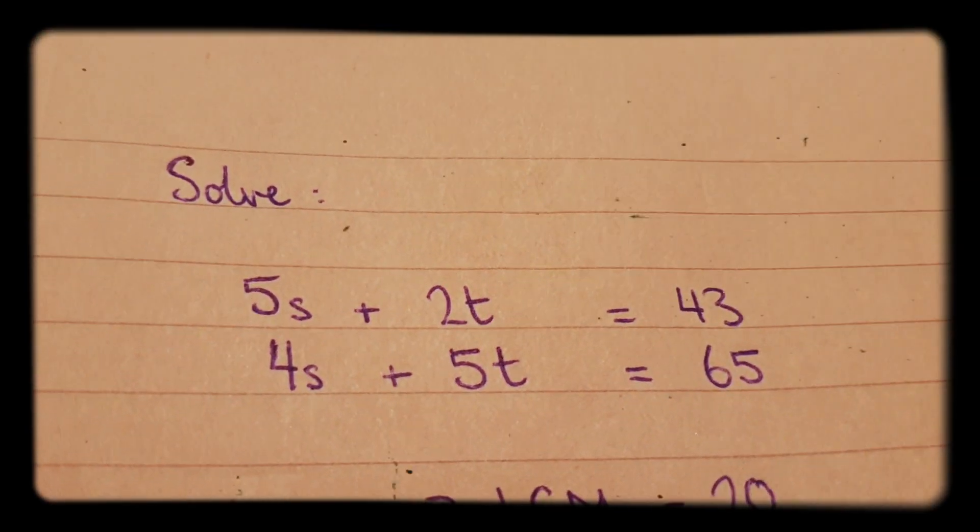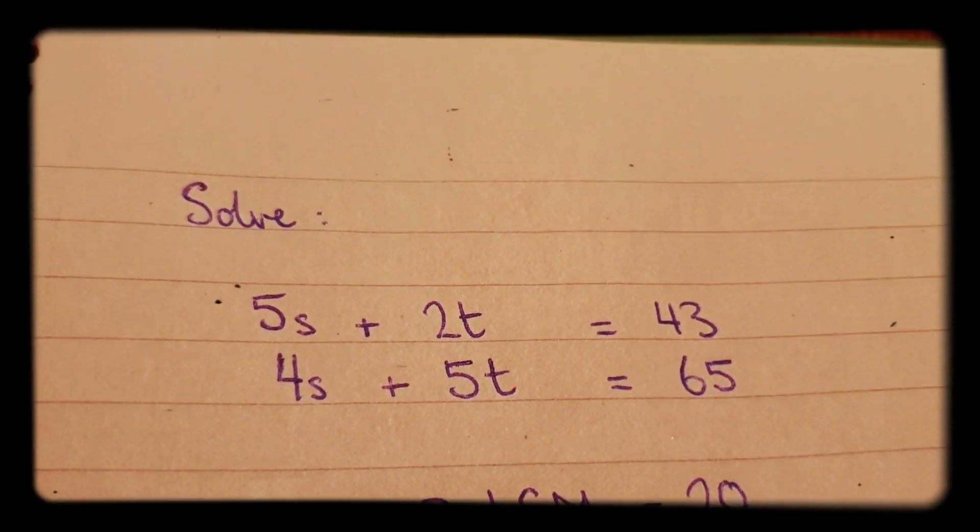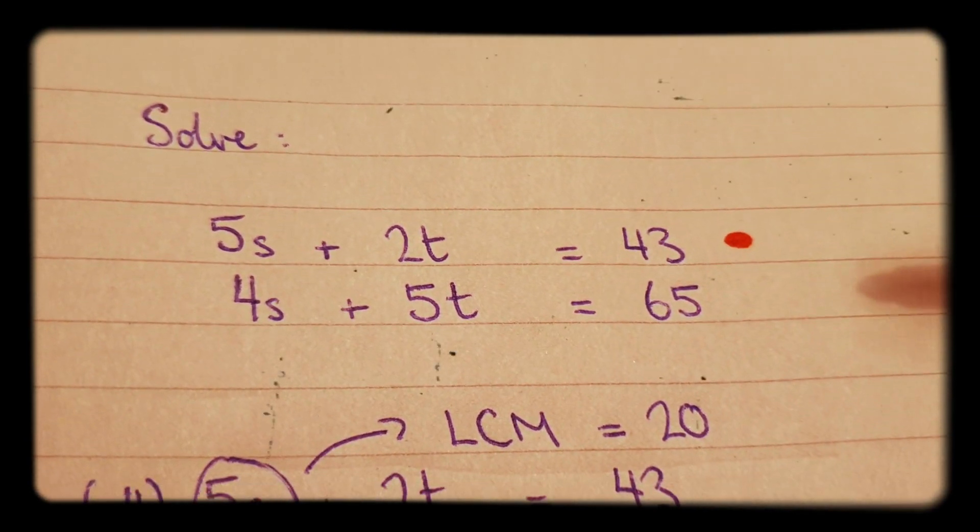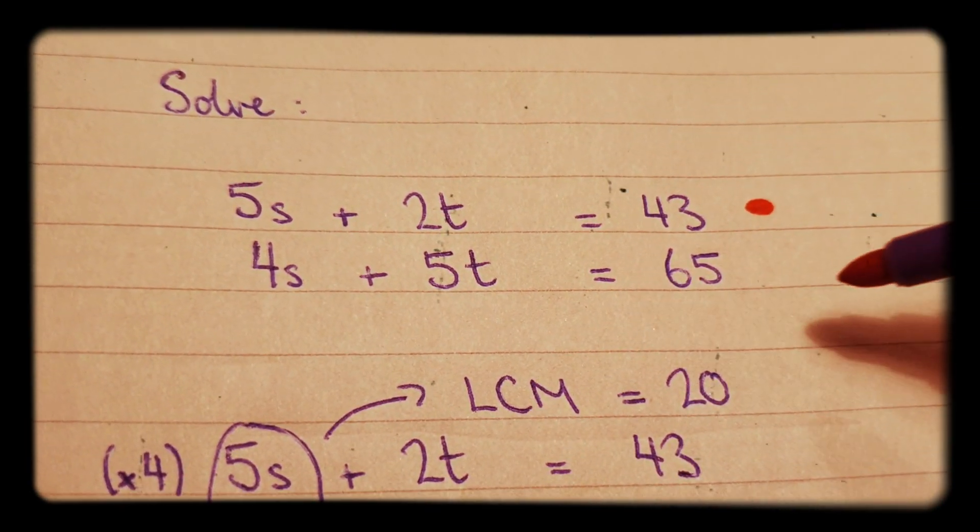We have a simultaneous equations question here. 5s plus 2t equals 43. 4s plus 5t equals 65.